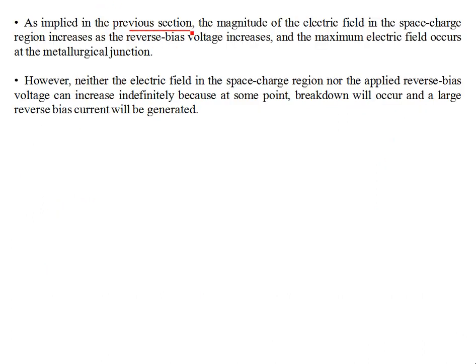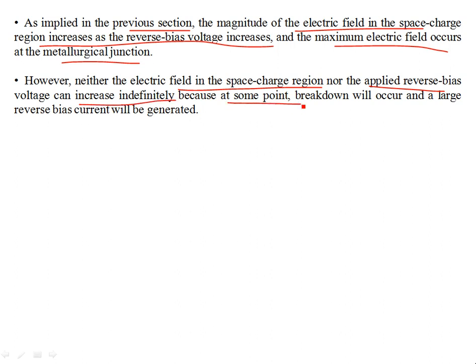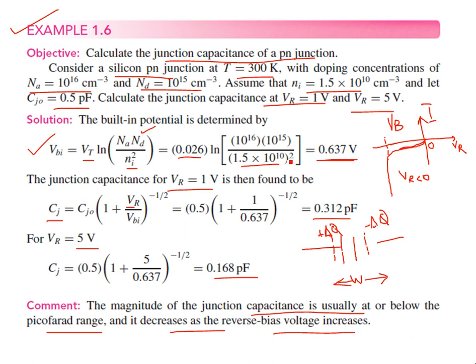As implied previously, the magnitude of the electric field in the space charge region increases as the reverse bias voltage increases, and the maximum electric field occurs at the metallurgical junction. Neither the electric field in the space charge region nor the applied reverse bias voltage can increase indefinitely, because at some point breakdown occurs and a large reverse bias current is generated — burning out the PN junction diode. We will talk more about breakdown voltages in upcoming lectures. Changing the polarity gives forward bias, which we will cover in the next video.